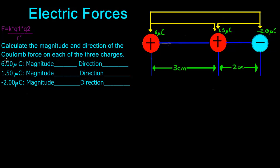The first thing we need to do is start with the 6 microcoulomb charge. We've got two forces acting on it. We've got this positive 1.5 microcoulomb charge, and it is going to be pushing up against this positive charge, so the force from it is going to be pushing in that direction. The other force on this 6 microcoulomb charge is this negative 2 microcoulomb charge, and because it's attracting, the force is going to want to go towards it.